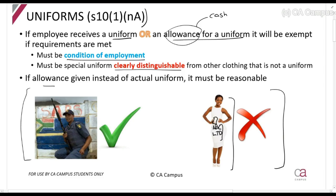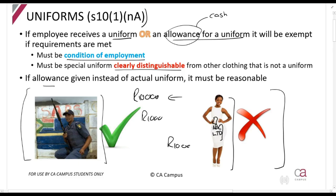If they give you an allowance or cash for a uniform, it must also be reasonable. So they can't say this police officer's uniform costs 10,000 rand when the actual worth is only 1,000 rand — you can't say that's reasonable. If they do that, the full 10,000 will be included in your gross income, and only the reasonable portion will be exempt.